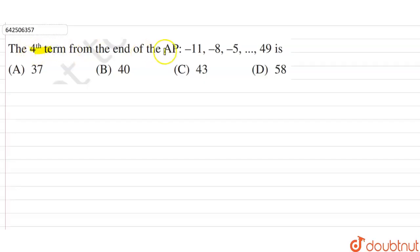fourth term from the end of the AP: -11, -8, -5...49. So firstly, we'll reverse this AP. The reverse AP will be equal to 49, dash dash dash, -5, -8, and -11.